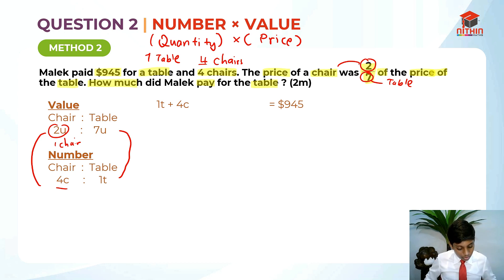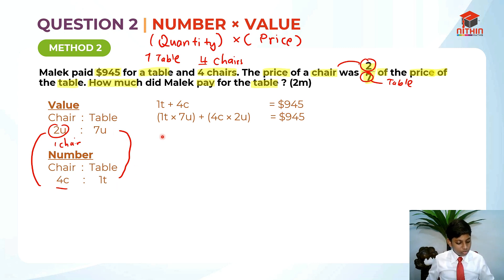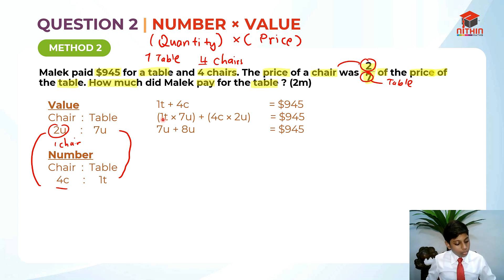We must know that 1 table is 7 units, because this is connected. Malik only bought 1 table and 1 table costs 7 units, so we do not need to change it — it's just 1 times 7. A chair is 2 units in price but Malik bought 4 chairs, so we need to take 4 chairs times 2 units — that's 4 times 2. This is equal to $945. So 7 units plus 8 units: 1 times 7 is 7 and 4 times 2 is 8, so 7 units plus 8 units is equal to $945.